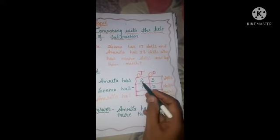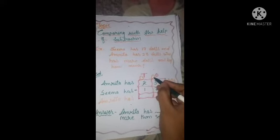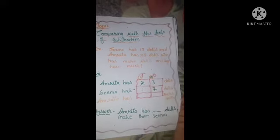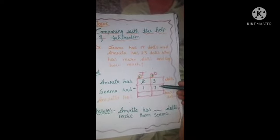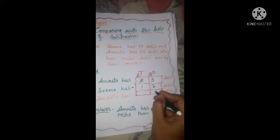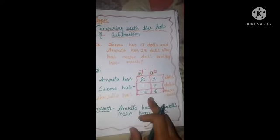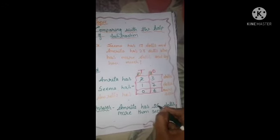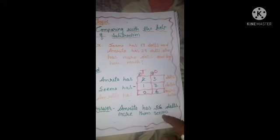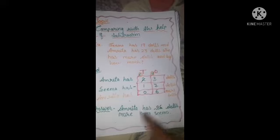In the ones column, 3 is on top and 7 is on bottom. Since 3 is smaller than 7, we cannot subtract, so we borrow one ten from the tens place. That makes 13 in the ones place. Now 13 minus 7 gives us 6. In the tens place, 1 minus 1 gives us 0. So Amrita has 6 dolls more than Seema. With subtraction we can compare two numbers.